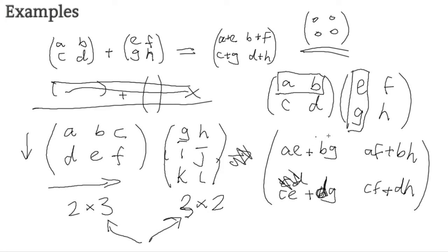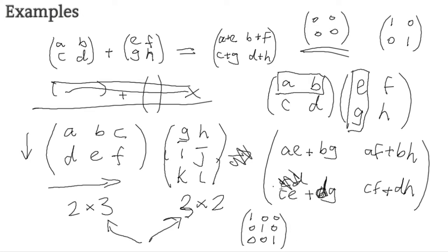One much more useful matrix is the identity matrix. In 2x2 form it is: 1, 0 on the top row and 0, 1 on the bottom. In 3x3 form it's 1, 0, 0 on the first row; 0, 1, 0 on the second; and 0, 0, 1 on the third. There are only identity matrices for square matrices — non-square matrices have no identity.